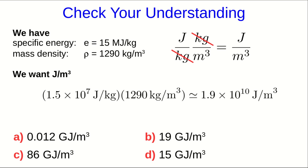If you do that, you come up with 1.9 times 10 to the 10 joules per meter cubed, or in other words, 19 gigajoules per meter cubed.